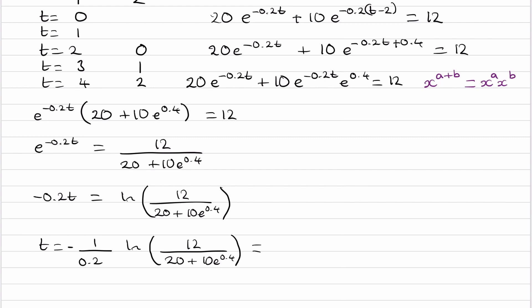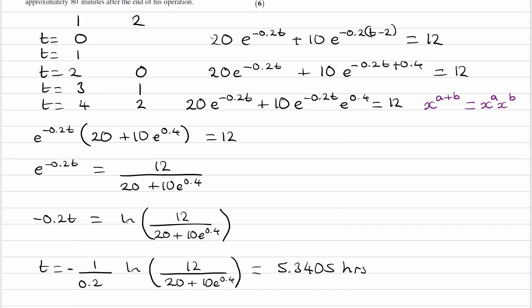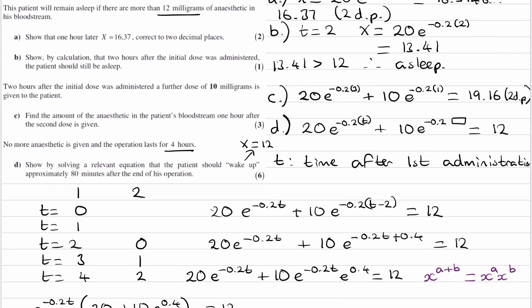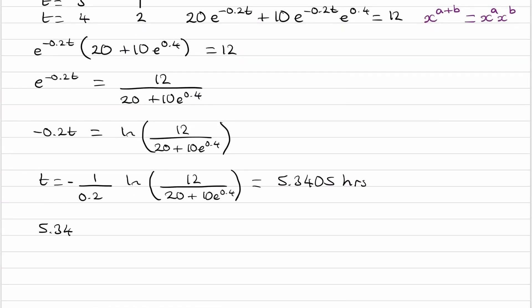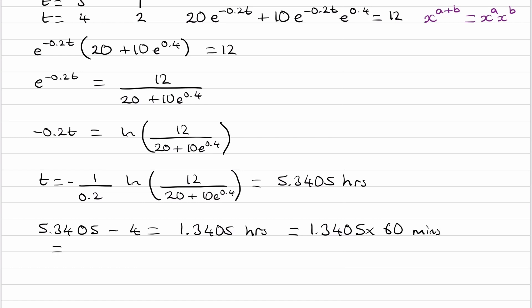Typing into the calculator, we get T equal to 5.34 hours. The operation is 4 hours long, so subtracting 4 hours gives 1.3405 hours after the end of the operation. Converting to minutes by multiplying by 60, we get 80.4 minutes, which is approximately 80 minutes. And that is our answer.